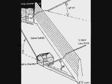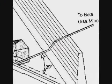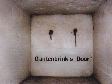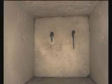The shaft ended at a point called Ganton Brinks Door, a block which prohibited any further movement up the shaft. The door was outfitted with two copper fittings, although that's highly in question given the deterioration of the structure that formerly existed there, and the fact that the copper fittings would have blocked their ability to put the stone in place in the first place.